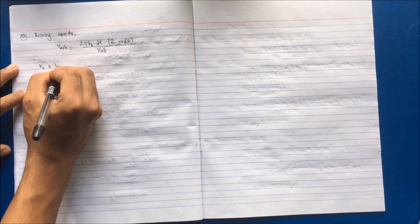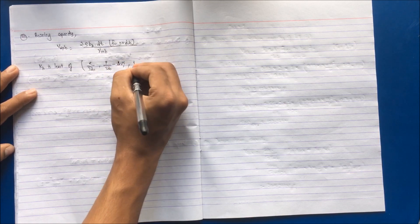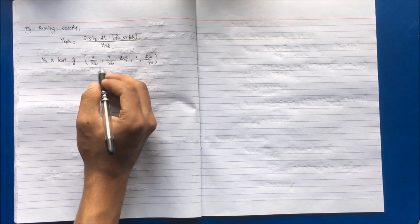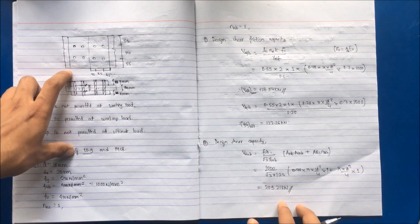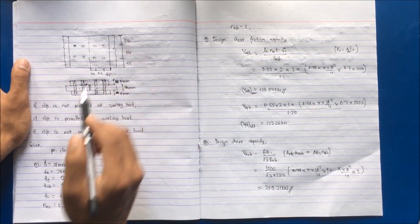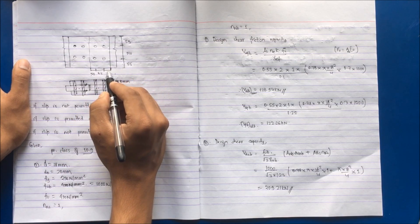The third step is to calculate bearing capacity. The formula is VDPB = 2.5 × KB × d × t × FU or FUB, whichever is smaller, divided by γMB. KB is taken as the least of: e/(3d₀), p/(3d₀) − 0.25, FUB/FU, and 1. Generally the value comes from the first two terms since the last two are usually larger.